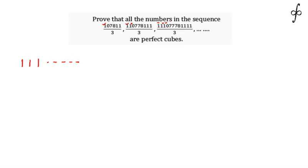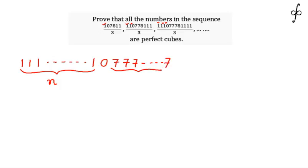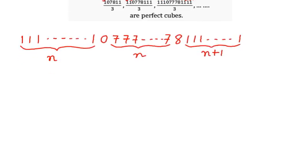The nth term of the sequence will look like: n ones, followed by a zero, then n sevens, then an eight, then n plus one ones — following the pattern. For example, for the third term, '1' is present four times, so for the nth term '1' will be present n plus one times. This whole number is divided by 3, giving us the nth term.